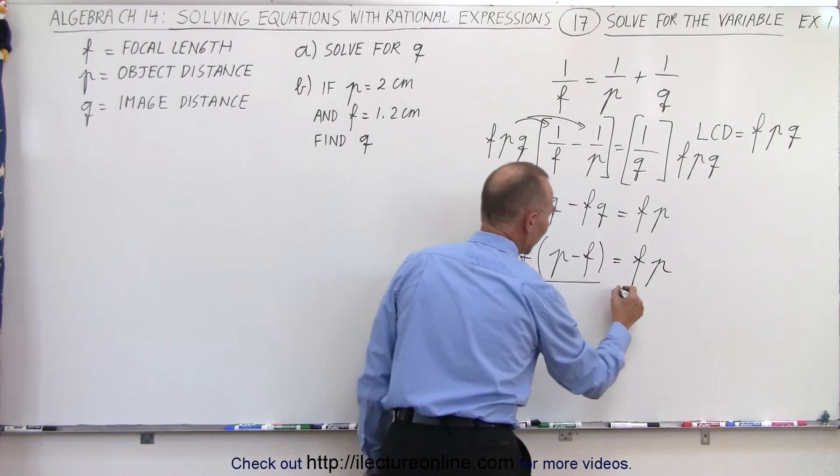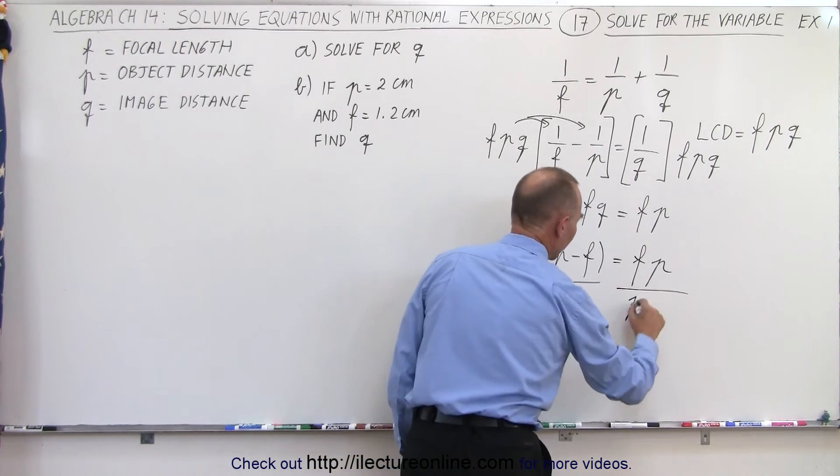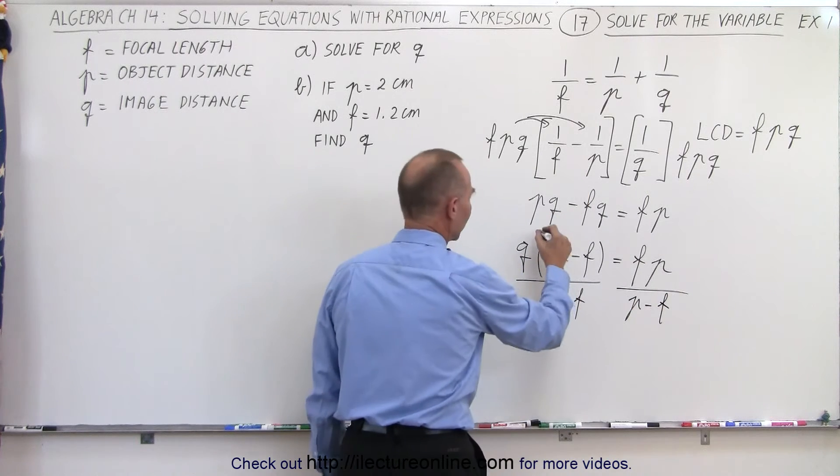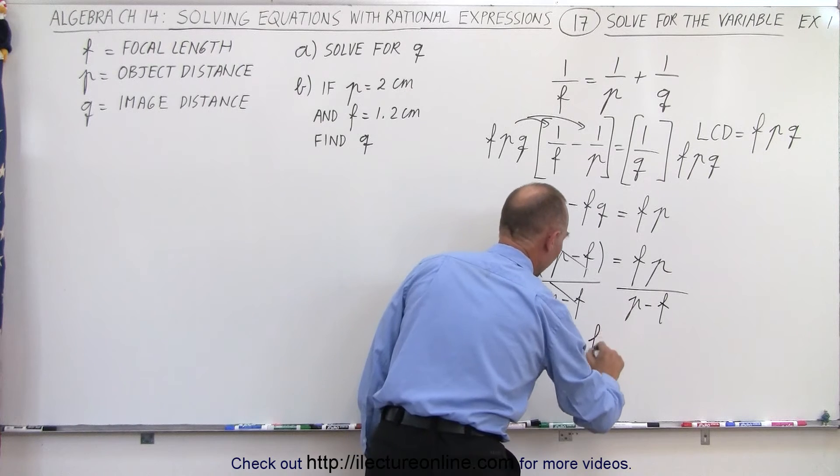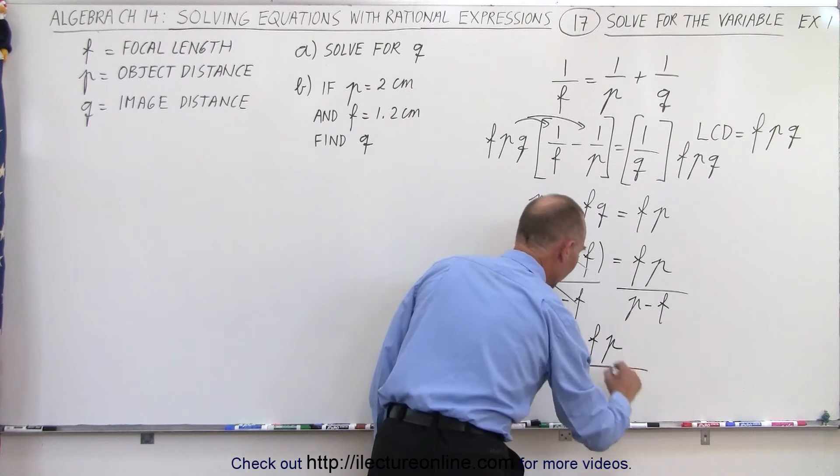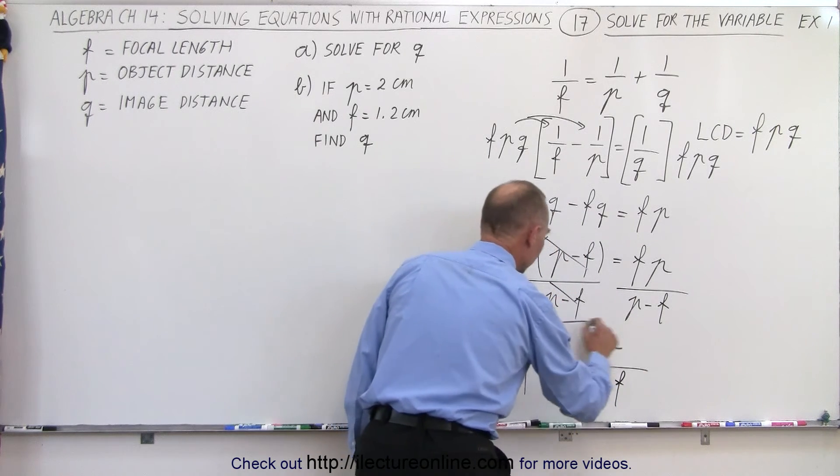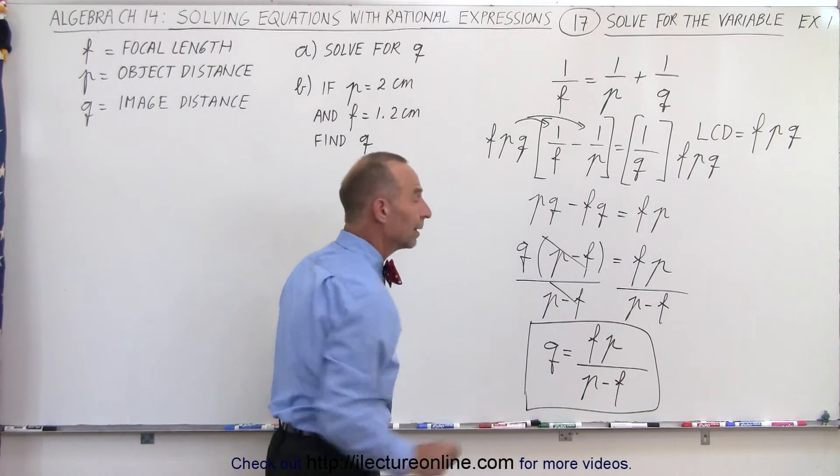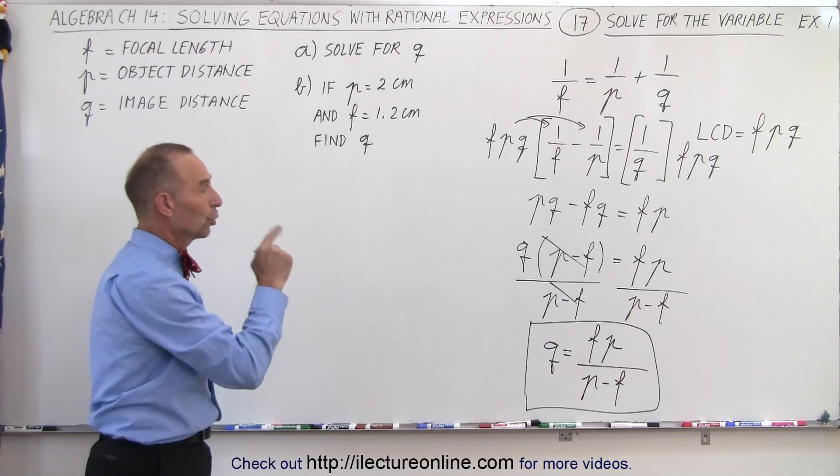And then, finally, we're going to divide both sides of the equation by P minus F. And if we do that, these cancel out, and we're left with Q is equal to F times P, the product of the focal length times the object distance, divided by the object distance minus the focal length of the lens. And there we go. That's what we're looking for. The same equation solved for Q.